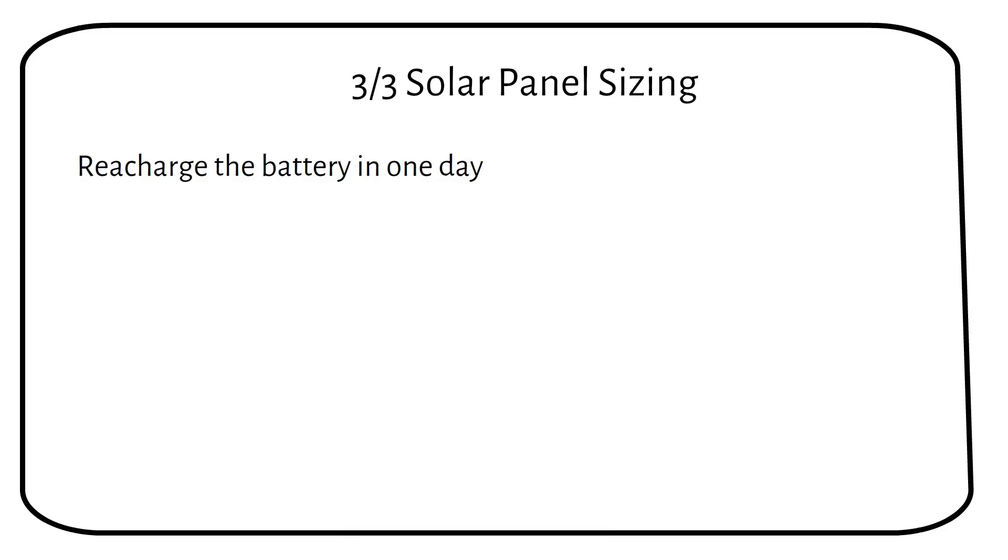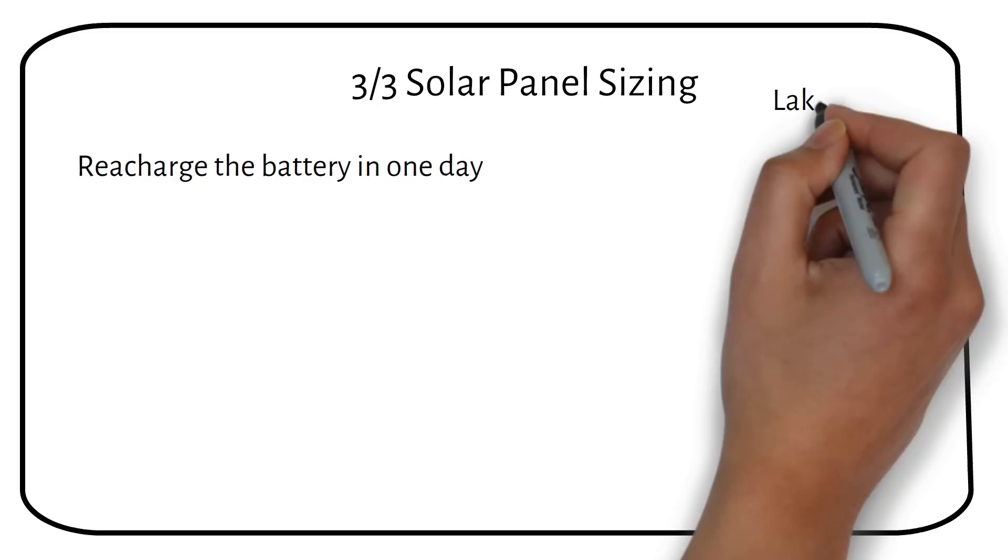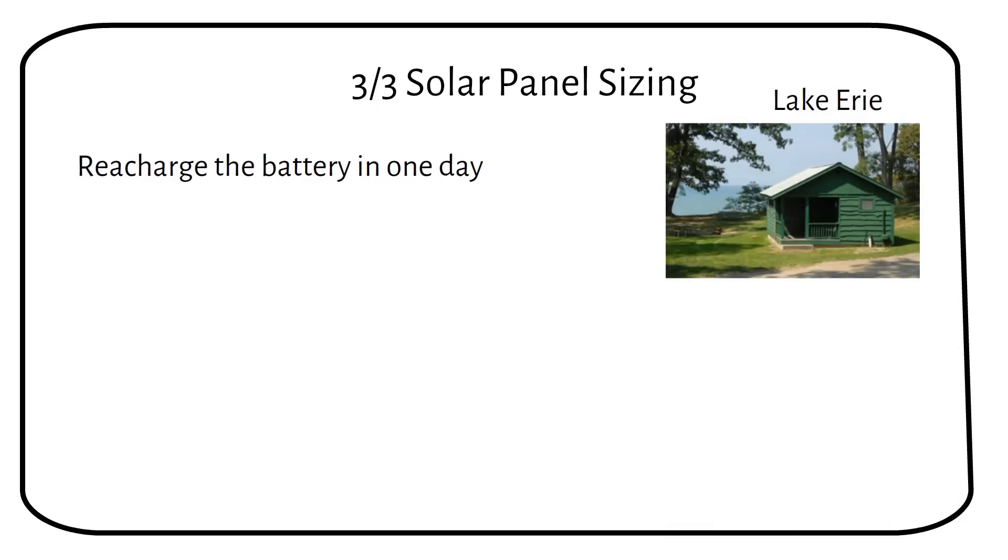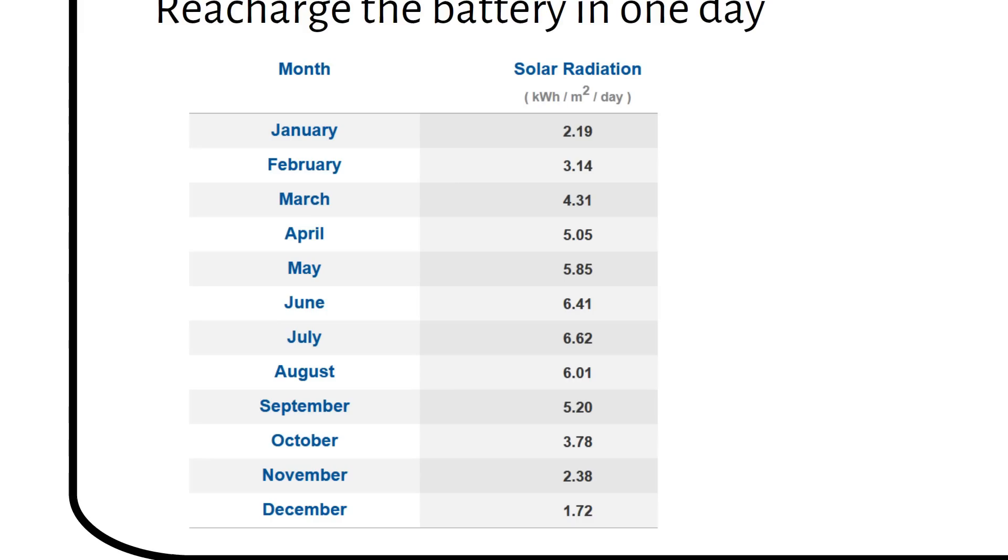This will depend on the battery type. We need more solar power for the lead acid battery because it's less efficient than the lithium battery. We must determine the average number of sun hours for your location. Let's say your cabin is located on Lake Erie, close to Cleveland. Here is a sun hour chart for that location.